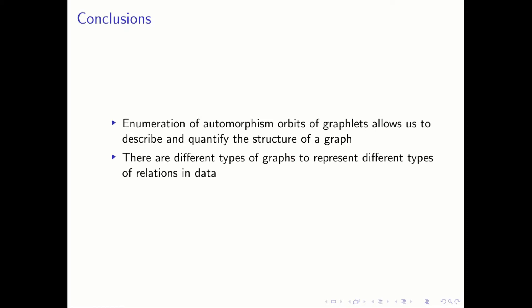In conclusion of my part of this presentation, the take-home points are that enumeration of automorphism orbits of graphlets allows us to describe and quantify graph structure, and that using different types of graphs will allow us to represent different types of data. That's all from me, and now I'm going to pass you on to Dylan, who will get into an application of the concepts I've equipped you with.